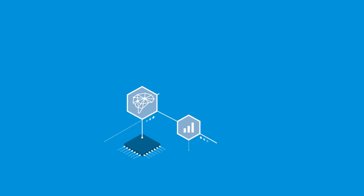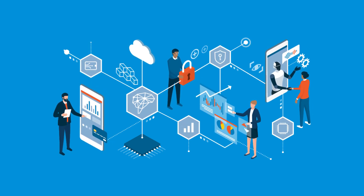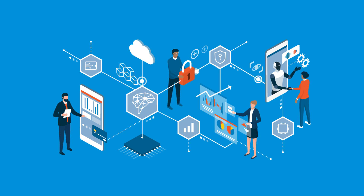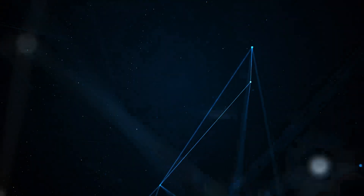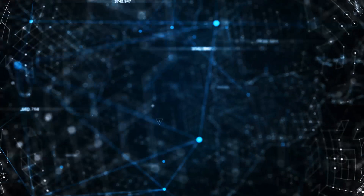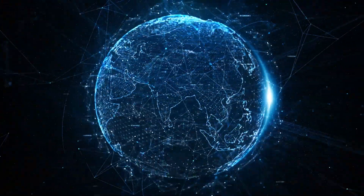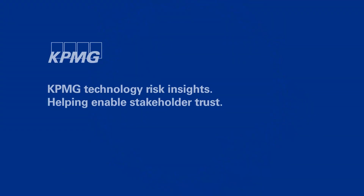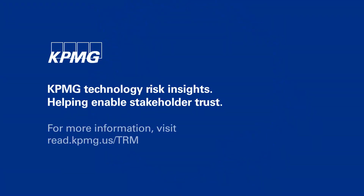With blockchain, digital trust is built into the system, removing the need for a trusted third party. To recap, blockchain technology is a distributed ledger that provides users with digital trust to perform transactions. Blockchain uses cryptography and consensus methods to create these immutable blocks. This technology has far-reaching impact across industries. For more KPMG technology risk insights, please visit our website.